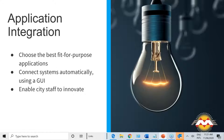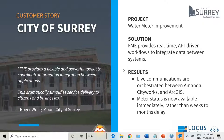The second common use case is application integration. Many departments within local government use their own specialized applications like asset management tools, work order management systems, permitting, ERPs, and GIS. The drawback is data silos where every data set is stored independently, disconnected and out of sync. Implementing an integration workflow allows systems to automatically talk to each other, trigger actions, and send data freely between them. The example here is the City of Surrey, which implemented an application integration workflow with FME for a water meter improvement project.